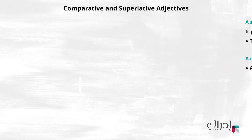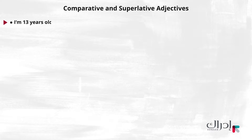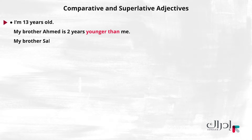Now, look at the examples. I'm 13 years old. My brother Ahmad is two years younger than me. My brother Salim is the youngest of us all. In the second sentence, the speaker is comparing two brothers only. In the last sentence, he's comparing all three brothers.